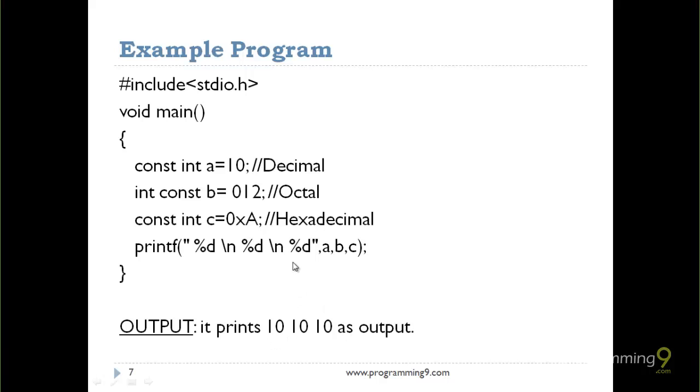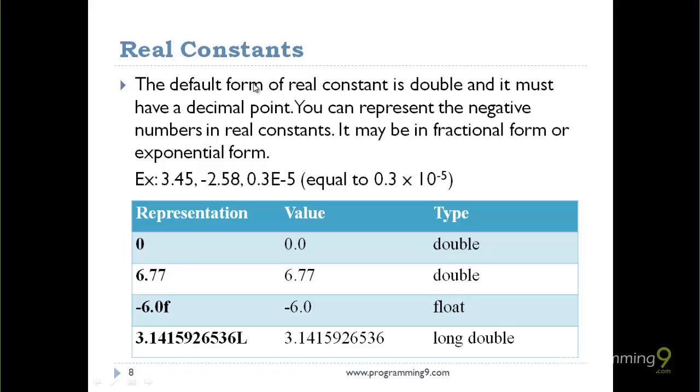Real constants: the default form of a real constant is double, and it must have a decimal point. Real constants can be classified as float and double.